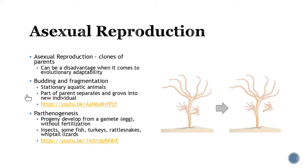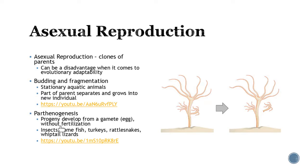There are different ways animals use asexual reproduction. One is budding and fragmentation, seen in stationary aquatic animals like hydra and sponges — a part of the parent separates or fragments off and starts a new animal that is an exact clone of the parent. Another is parthenogenesis, where progeny develop from an egg only, without fertilization. This happens more often than you think — insects, some fish, turkeys, rattlesnakes, and some lizards use it. There's even a video of a female shark alone in an aquarium that had pups.